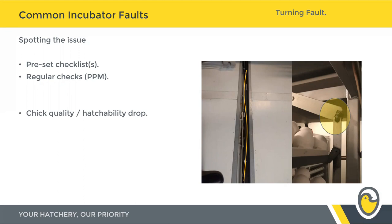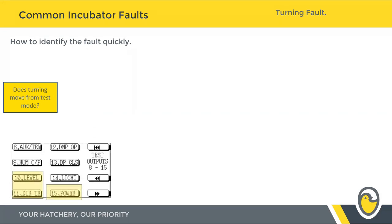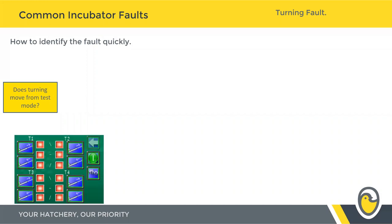If your turning angles drop below around 38 degrees left and right, you're going to see a noticeable drop in your chick quality and hatchability — not only because of embryo development within the egg but also because of the impact on airflow within the cabinet. The airflow is designed around the trolleys turning to the optimum angle of around 34 to 35 degrees, and anything below that will have an impact.